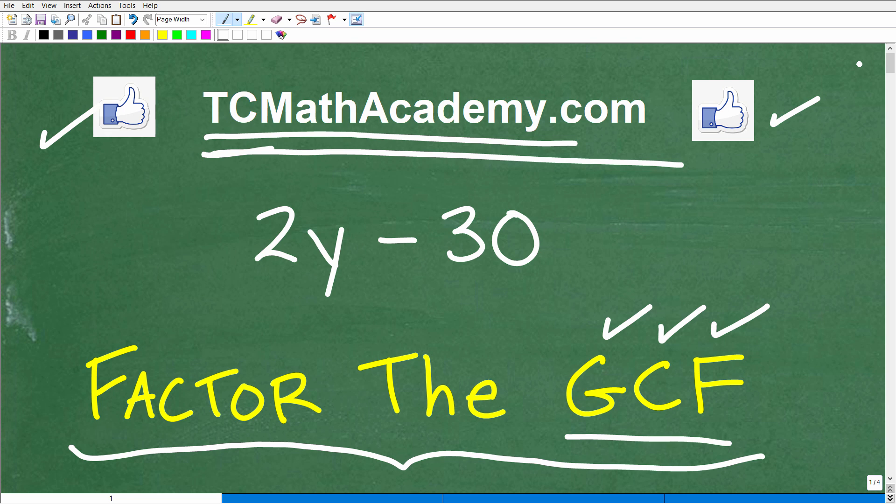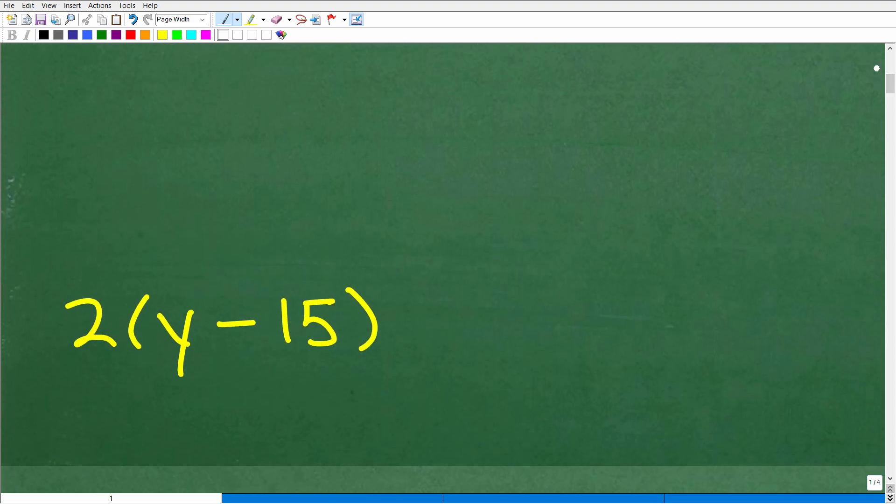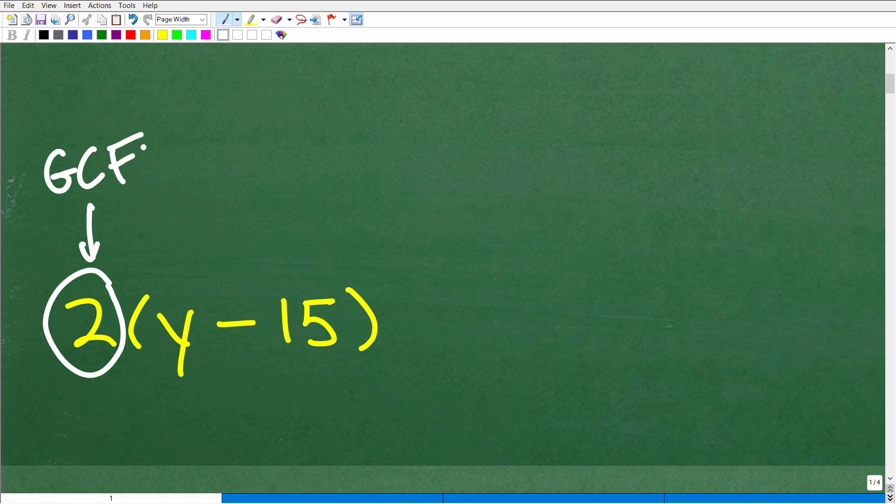So let's just go ahead and take a look at the answer. We have 2y minus 30. We want to factor out the GCF. What is that? Here, the directions is factor the GCF, but effectively we want to factor out the GCF. So here it is. That expression is equal to 2 times y minus 15. And the 2 here would be the greatest common factor.